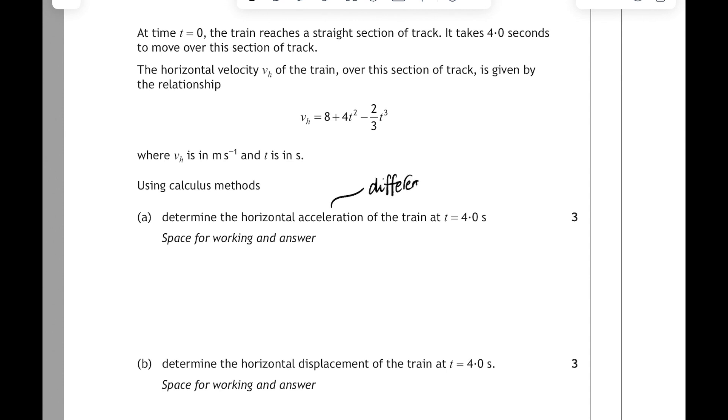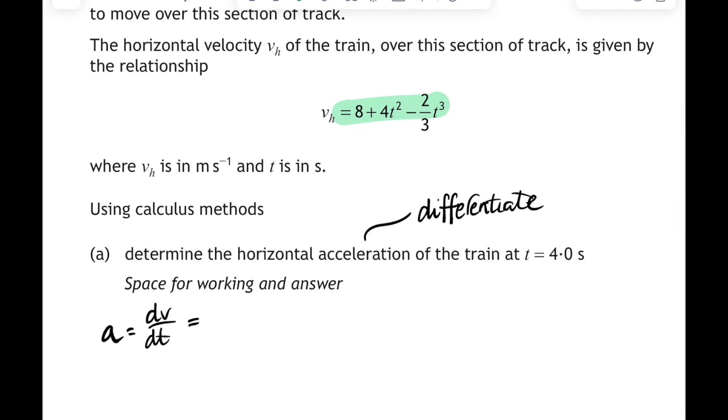We're going to differentiate in part a to get the relationship for the acceleration, and then sub in, and we'll integrate for part b. So, firstly, let's make the statement that acceleration is the rate of change of velocity, and then we'll differentiate the velocity relationship. So the 8 disappears, and then we're going to multiply the 4 by the power. That's 2 times 4 is 8, and the power goes down by 1. The next bit is quite tricky. It's the 2 thirds times the 3, which is 2 times t squared. Multiply by the power, and the power goes down by 1. So 2t squared.